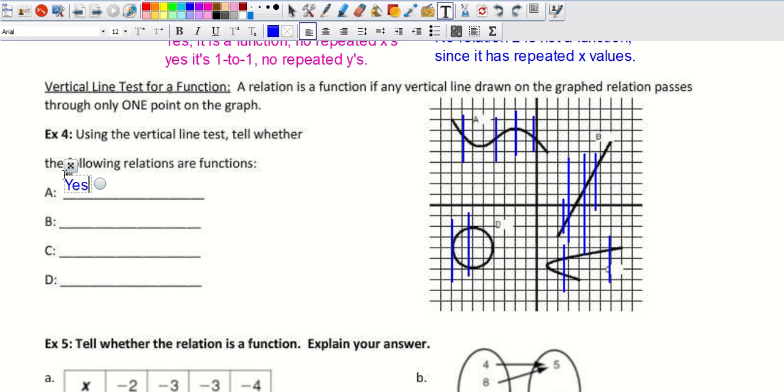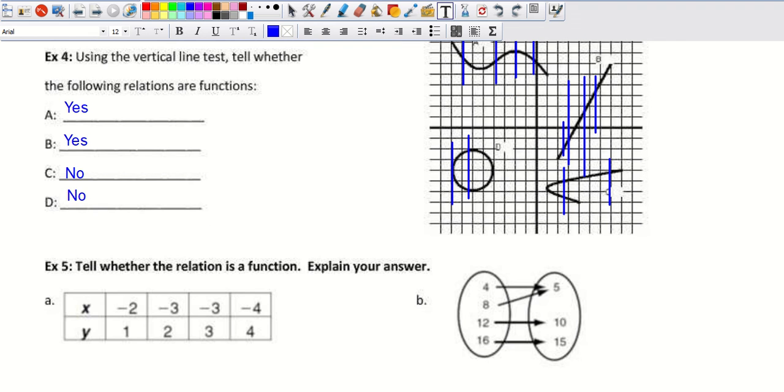So remember, A we said was yes, pass the vertical line test. B was yes, also pass the vertical line test. C was no, failed the vertical line test. It had more than one repeated X value. And no for D.